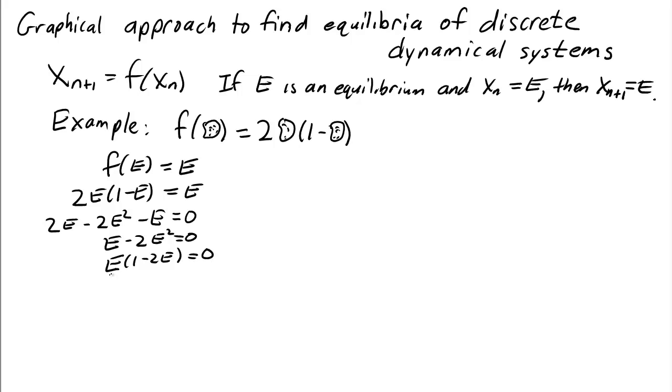For this product to be 0, either factor must be 0, so there are two equilibria. One is E = 0, and the other one is 1 - 2E = 0. In other words, the equilibria are E = 0 or E = 1/2.